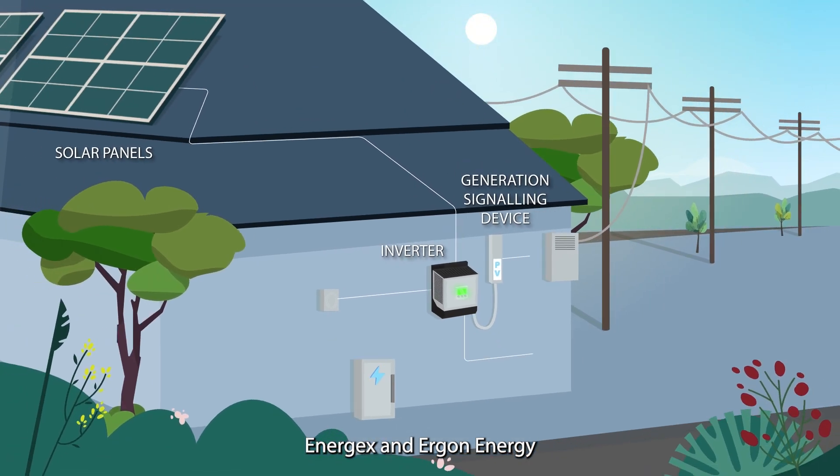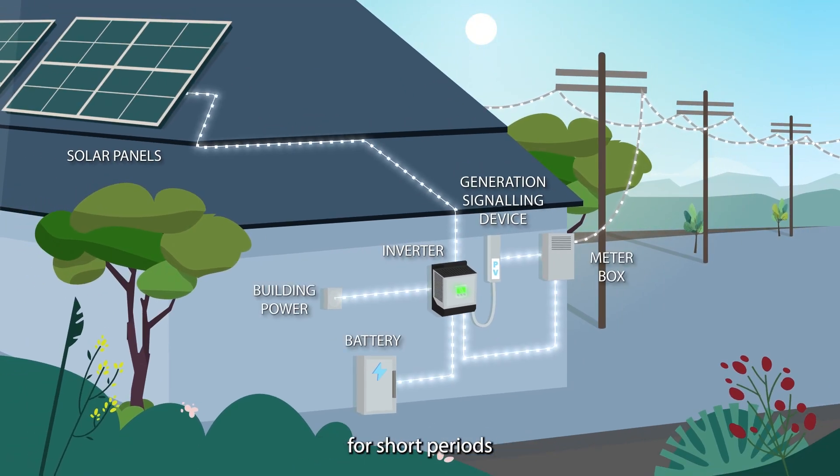Energex and Ergon Energy can then switch off these systems for short periods as a last resort in energy emergency situations when directed to do so by the Australian energy market operator.